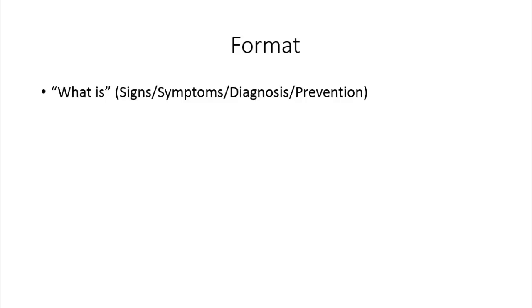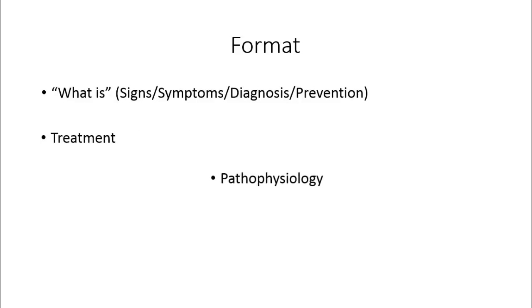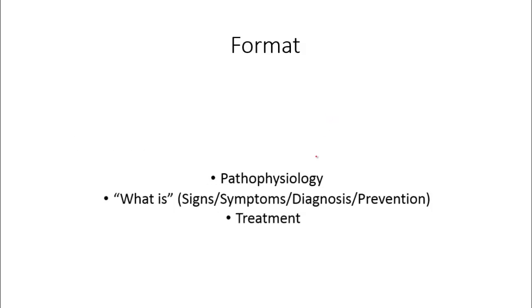The format they ask is to start off with what is the disease, signs, symptoms, diagnosis, and prevention, followed by the pathophysiology and a treatment. However, I'm going to rearrange this and start off with the pathophysiology. Anatomy is structure, so physiology is function — how something works. Path refers to disease. Think of a car that's not working: if you understand how the car works and then I tell you there's no gas, you'll understand the signs and symptoms, which leads to your diagnosis — let's fill it with gas — and prevention and treatment.